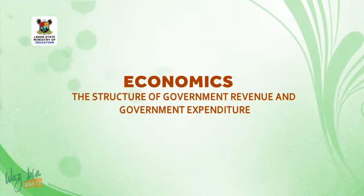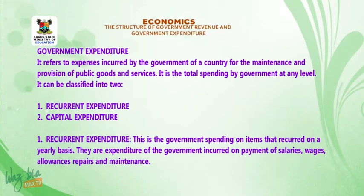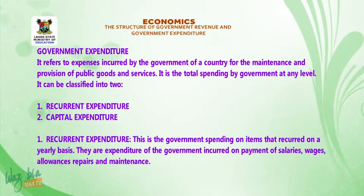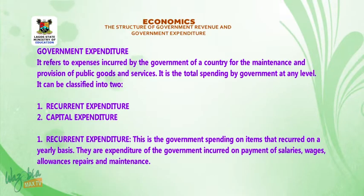Welcome back from that short break. We want to discuss government expenditure. It refers to the expenses incurred by the government of a country for the maintenance and provision of public goods and services — the total spending by government at any level. It can be classified into two: A. Recurrent expenditure, and B. Capital expenditure.